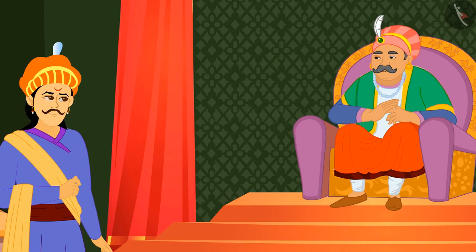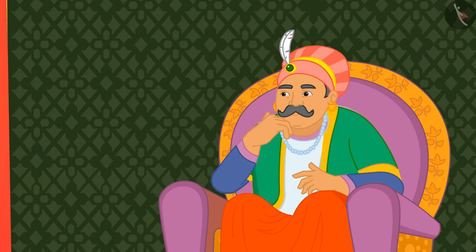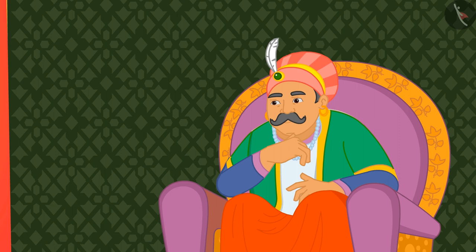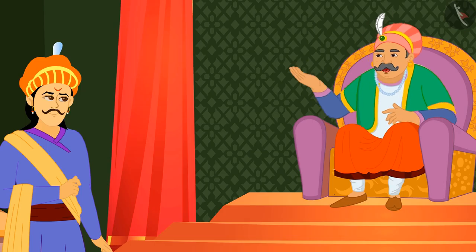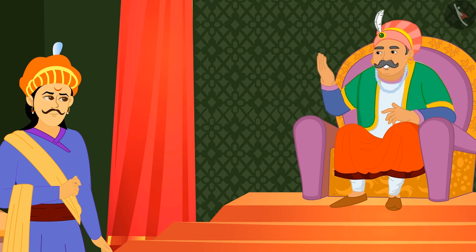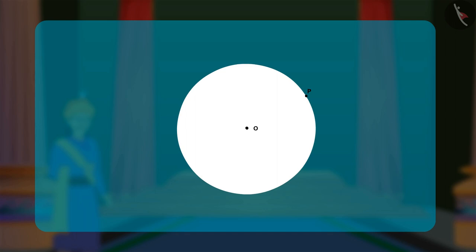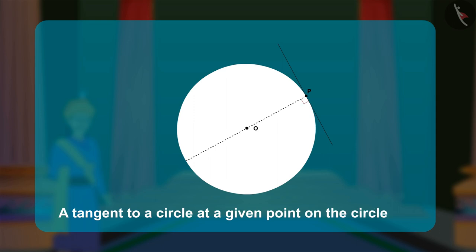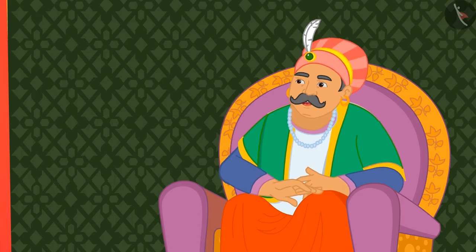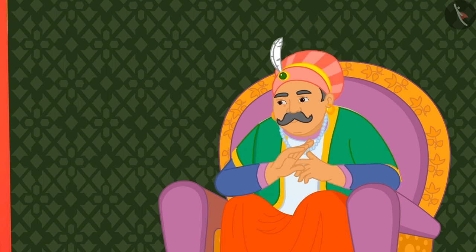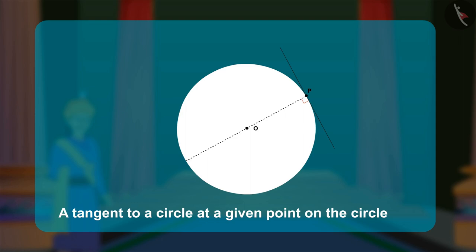Akbar was impressed, but wanted to test Birbal's intelligence one last time. He asked, 'If I give you a point on a circle, how will you show a tangent?' Birbal started folding the diameter of the given circle, passing through the given point P on the circle. At P, he folds the line perpendicular to the diameter. Akbar asked, 'Is a tangent always perpendicular to the diameter?' Birbal answered, 'A tangent line is always perpendicular to the circle's radius at the point of intersection.'